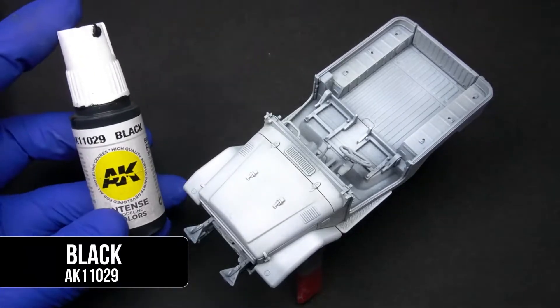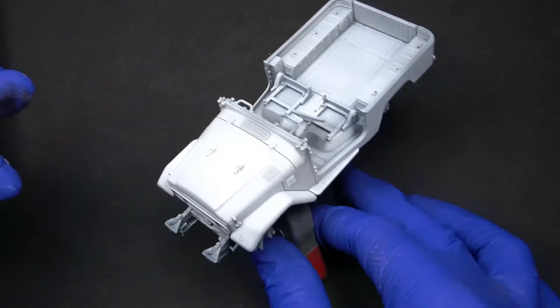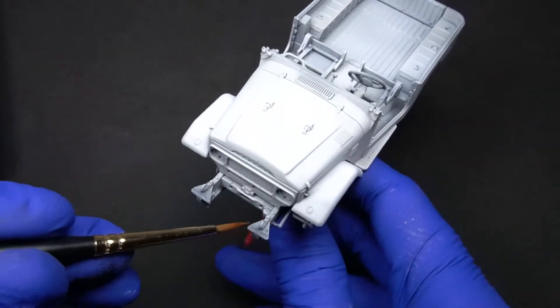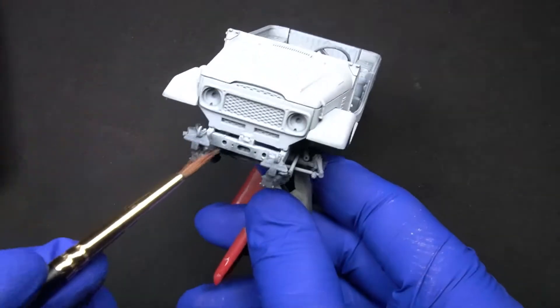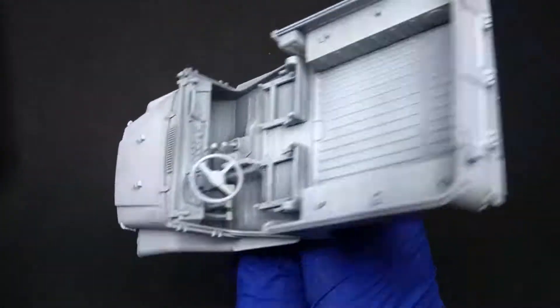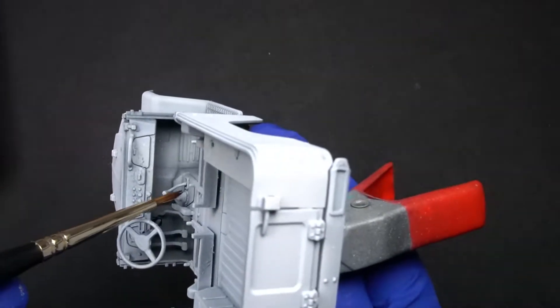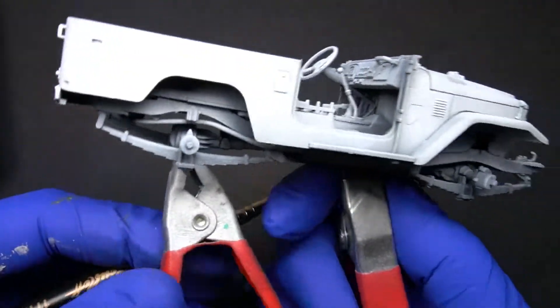After we have finished this step, we will use the third generation black paint to cover up all the parts and areas that we want to be black, as well as those that will be painted with metallic paint afterwards. This will accentuate the metallic colors, as they will appear brighter and more intense if applied over a black background.